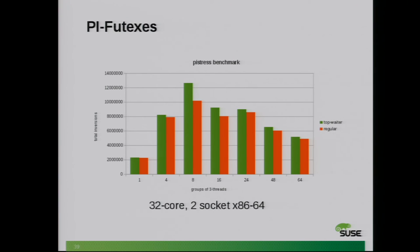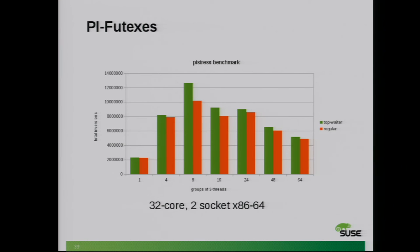This has shown some nice performance boosts on lower thread counts for a workload that actually exercises priority inversion. Each thread count groups three threads with low, high, and medium priorities and tries to trigger inversions. So if we measure the amount of inversions done in a period of time, we'll see that with the top-waiter optimizations — on a two-socket 32-core box — we do slightly more inversions than without those performance benefits.